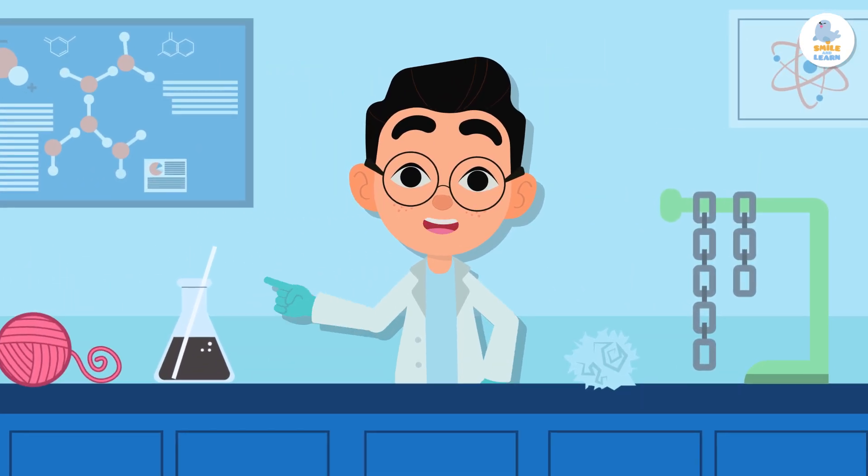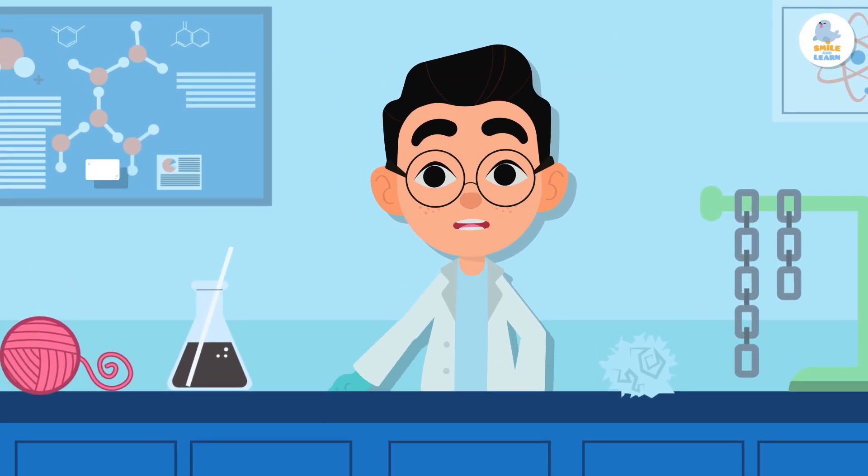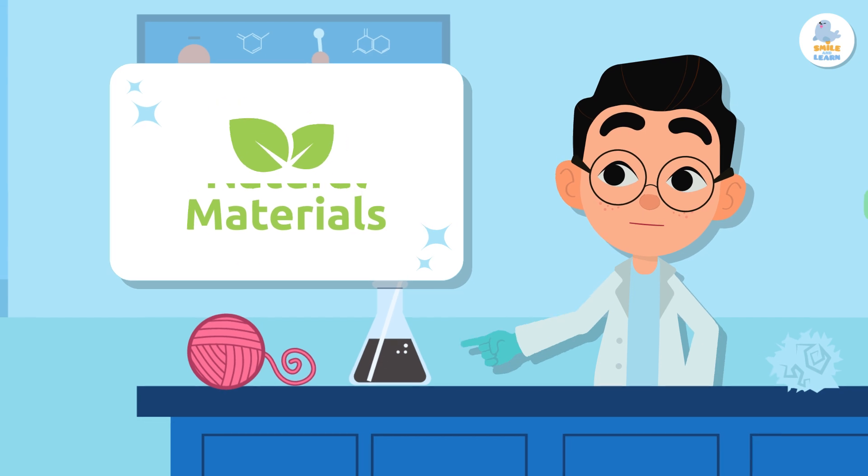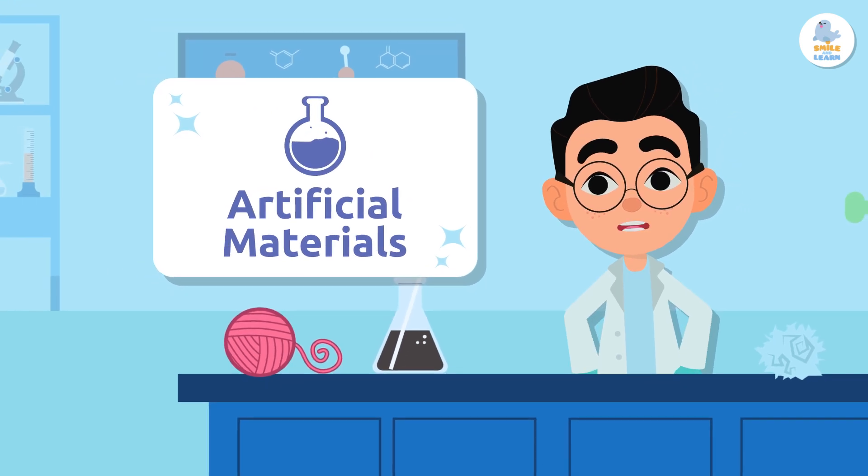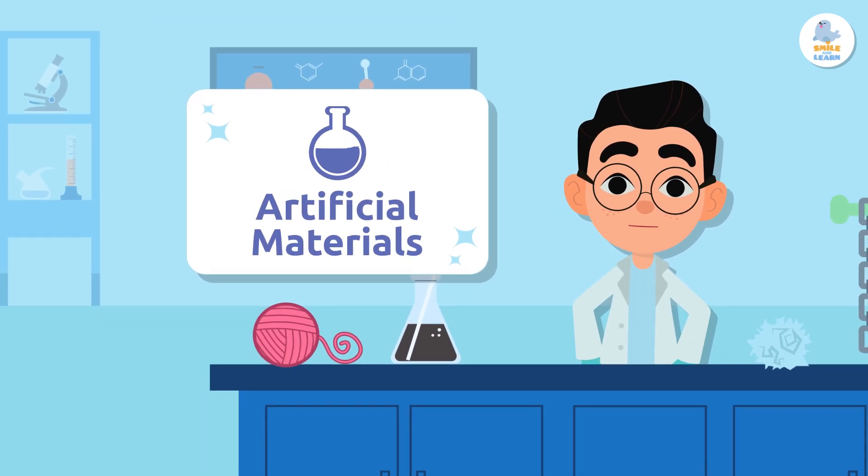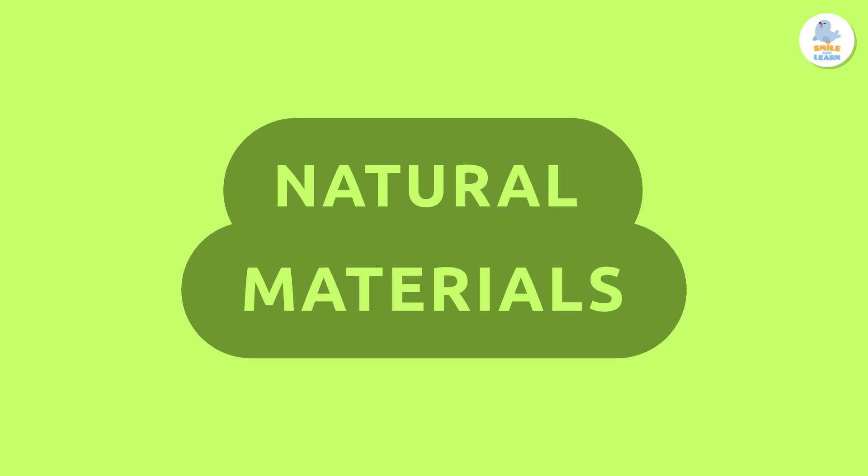There are two types of materials: natural materials and artificial materials. Let's see what makes them different. Natural materials.